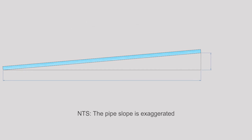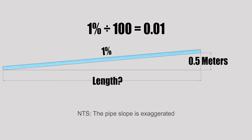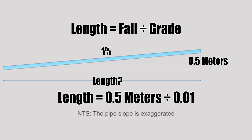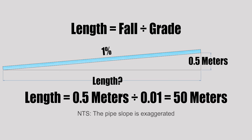For the last example, I have a pipe graded at one percent with a total drop of 0.5 meters, and I want to find the total length. We turn one percent into a decimal: 1 divided by 100 equals 0.01. Plugging into the formula — length equals fall divided by grade — 0.5 divided by 0.01 gives us 50 meters.